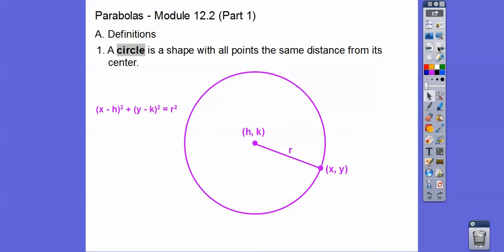So a circle — remember in the last lesson — a circle is a shape where all the points (x, y) are the same distance away from the center point. This center is called the radius. Our center is (h, k) with radius r. The equation of all these x, y points is: x minus h, squared, plus y minus k, squared, equals the radius squared. We spent a couple days on that.